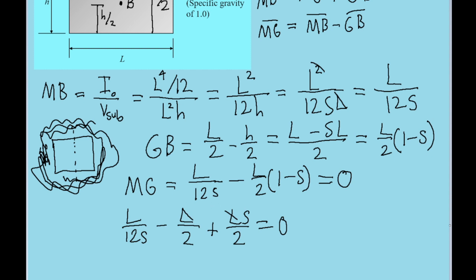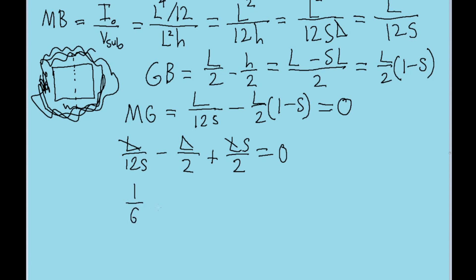Then these L's can all cancel out. I'm also going to multiply every term by 2s. This will simplify things and get the s out of the denominator, which would make it hard to use the quadratic formula. So now this equation becomes 1 over 6 minus s plus s squared equals 0. Then I'm just going to rewrite this in the more standard quadratic form: s squared minus s plus 1/6 all equal to 0.